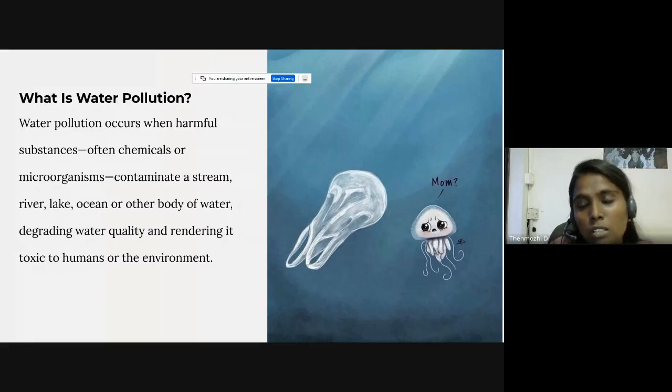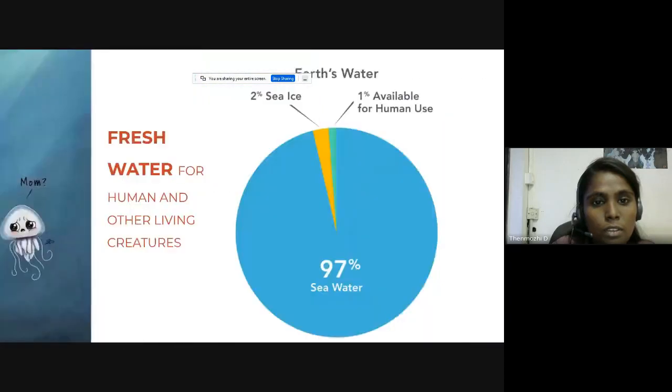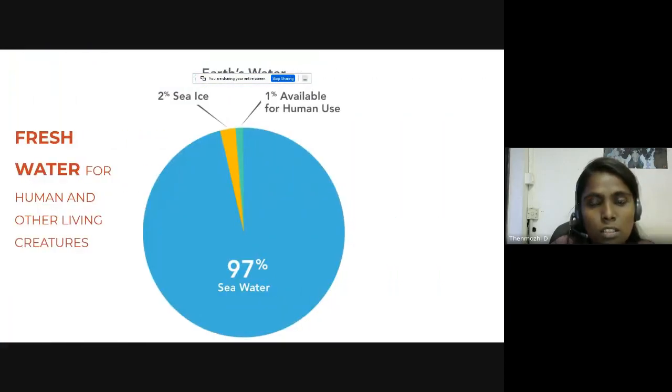Day by day, with the unwanted activities of humans, the water is being contaminated. We are living on planet Earth, where almost 3% of fresh water is available. The remaining 97% is seawater, which cannot be used for drinking and other daily needs.